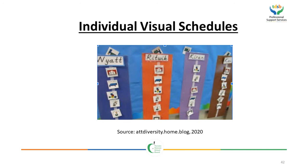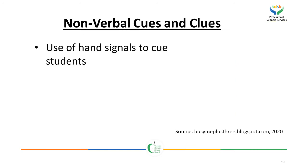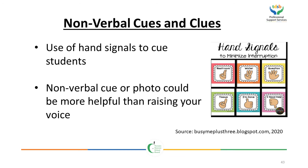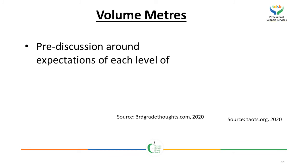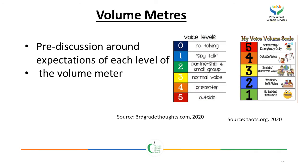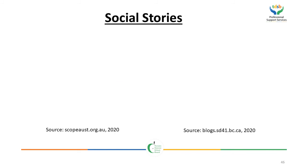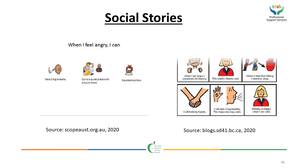This is an example of an individual visual schedule for a student. Nonverbal cues and clues: use of hand signals to cue students, as a nonverbal cue or photo could be more helpful than raising your voice. Volume meters: a pre-discussion around the expectations of each level of the volume meter should occur before its use. Social stories are used to teach particular social skills such as identifying important cues in a given situation, taking another's point of view, understanding rules, routine situations, upcoming events or abstract concepts, and understanding expectations. Social stories use a specifically defined style and format — you can find some by searching for Carol Gray.